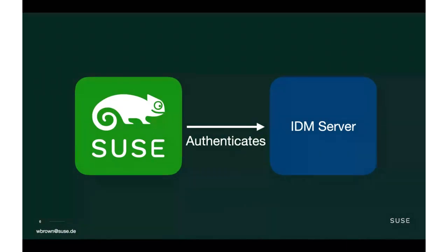Within SUSE Linux Enterprise today, we support Active Directory through the Samba team's work. We also support LDAP and Kerberos clients to authenticate to generic LDAP and Kerberos services. Within OpenSUSE, we support all of these plus extras: the ability to work with Red Hat's identity management system, also known as FreeIPA, and OpenSUSE can act as a client in those environments. We also have the ability to act as a CUNYDM client due to my work, because it's my project.